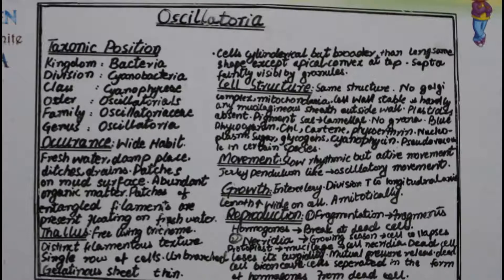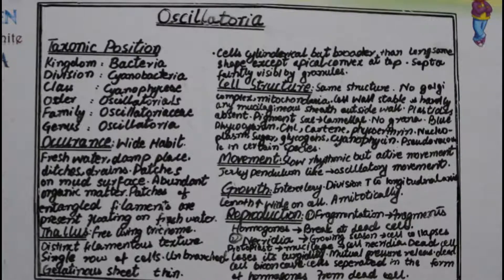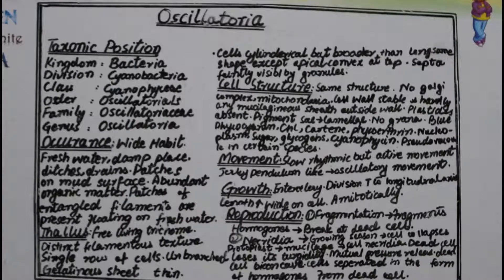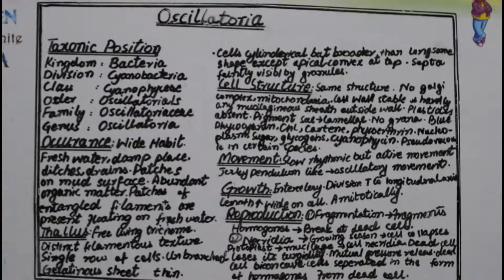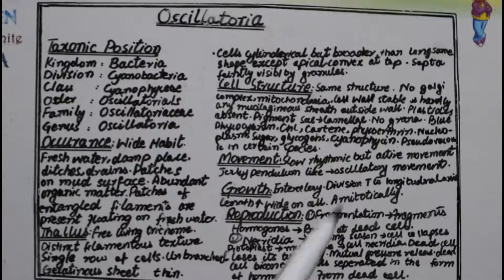The most important characteristic of any living thing is reproduction. In Oscillatoria, the first process is fragmentation, where the filament breaks down into fragments and each fragment gives rise to a new individual Oscillatoria. This is related to hormogonia reproduction — the breakdown of fragments is triggered by the presence of a dead cell.